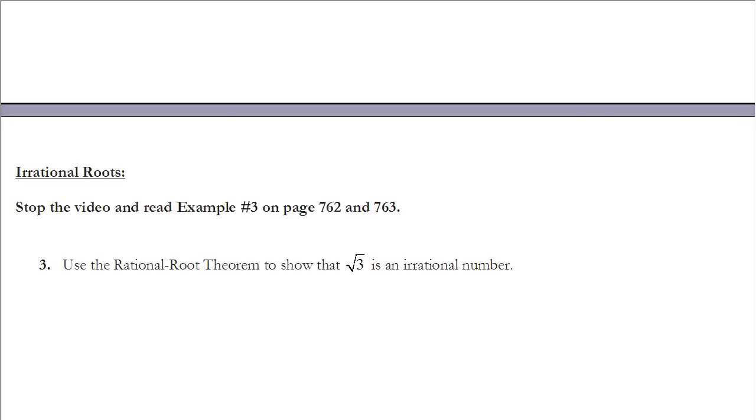So let's take a look at example 3. It says, use the rational root theorem to show that the square root of 3 is an irrational number. So we're going to do that kind of like the example in that, well, if this is true, I know that is a solution to x squared equals 3. Because if I take the square root of both sides, then x is equal to the square root of 3. So if I were to write that as a polynomial setting it equal to 0, I could say that's x squared minus 3 equals 0.